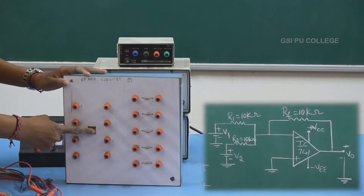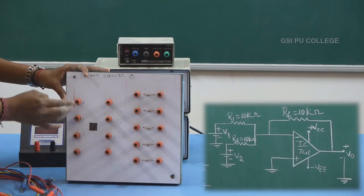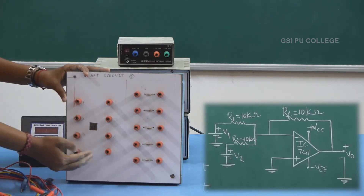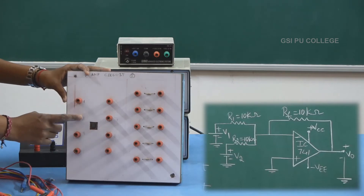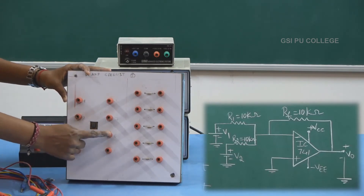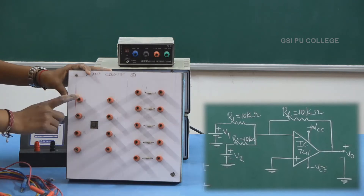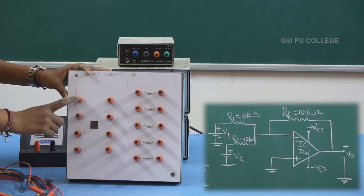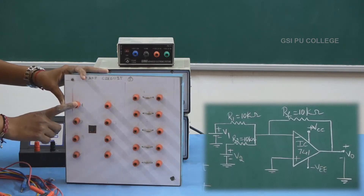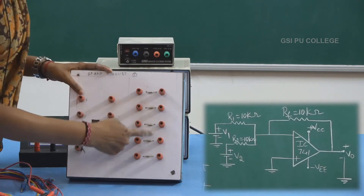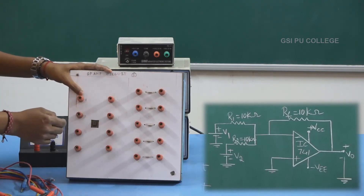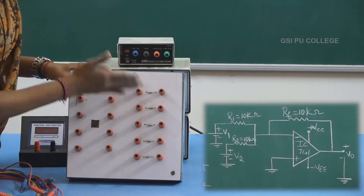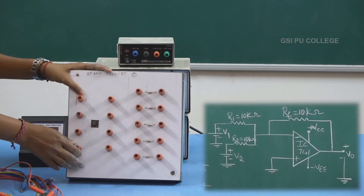This is the op-amp IC with four pins to the left and four pins to the right. The pins are numbered 1 through 8. For this experiment we need three resistors each having 10 kilo ohm. Here I have five resistors each of 10 kilo ohm resistance, and I will use any three of them for this experiment.